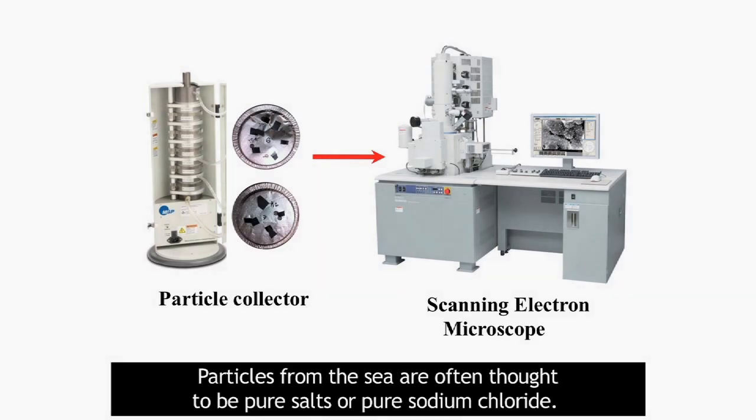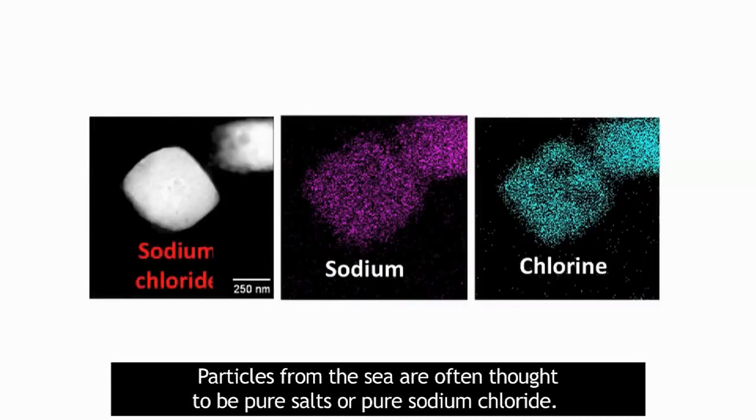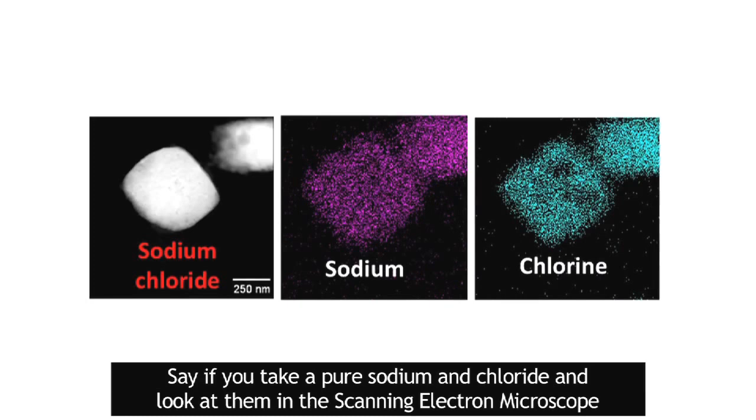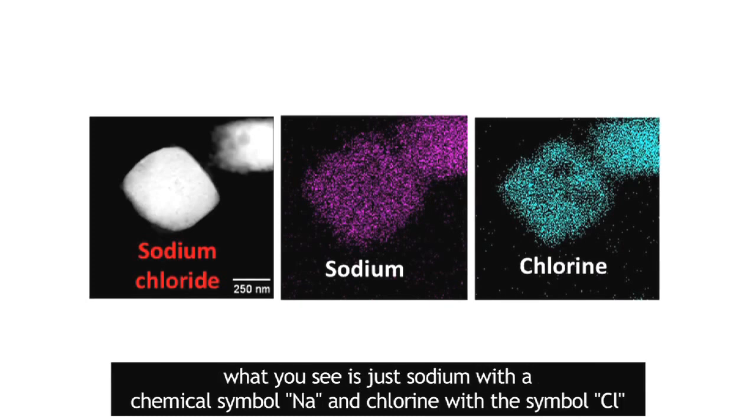Particles from the sea are often thought to be pure salts or pure sodium chloride. So if you take pure sodium chloride and look at it in the scanning electron microscope, what you see is just sodium with chemical symbol Na and chloride with symbol Cl.